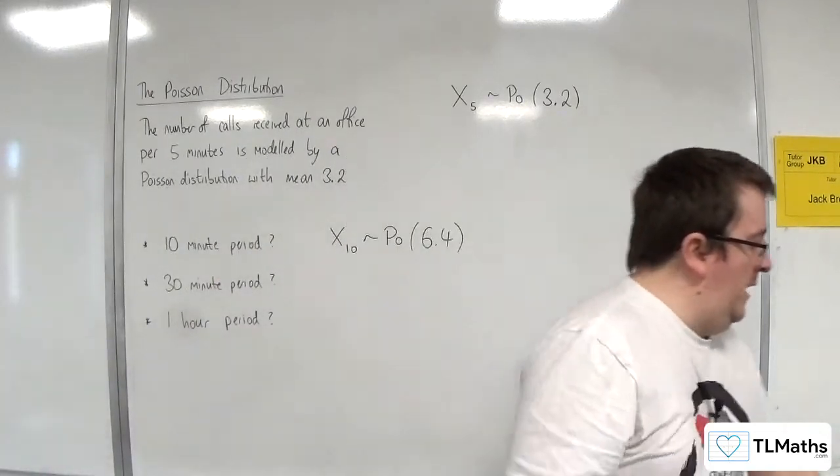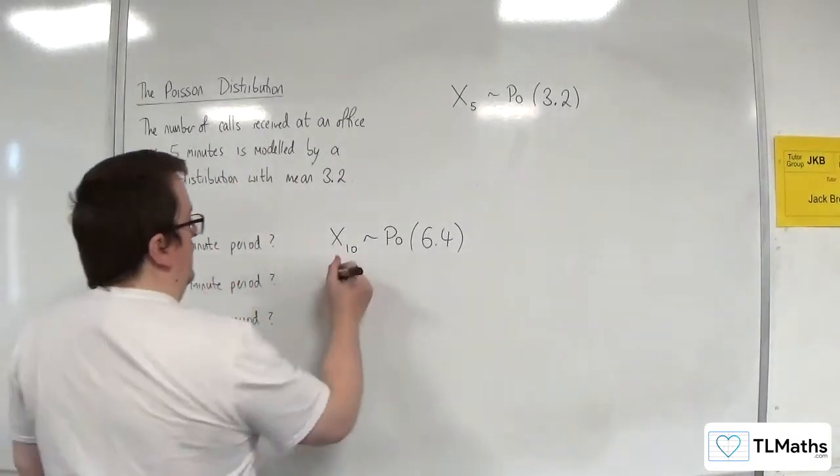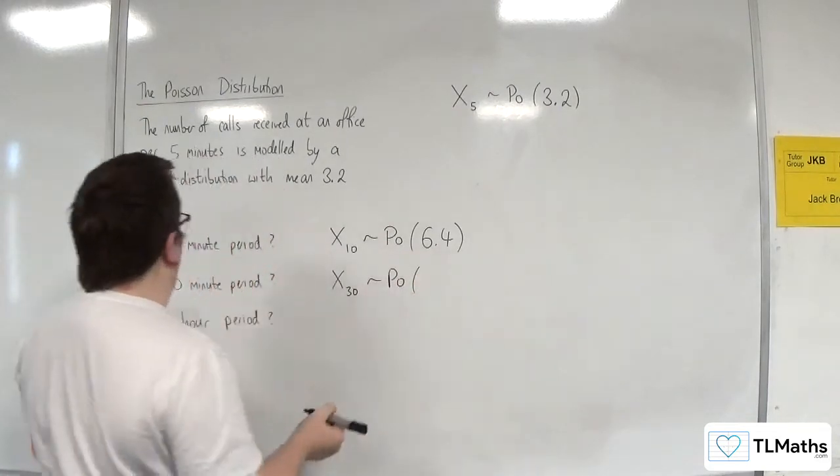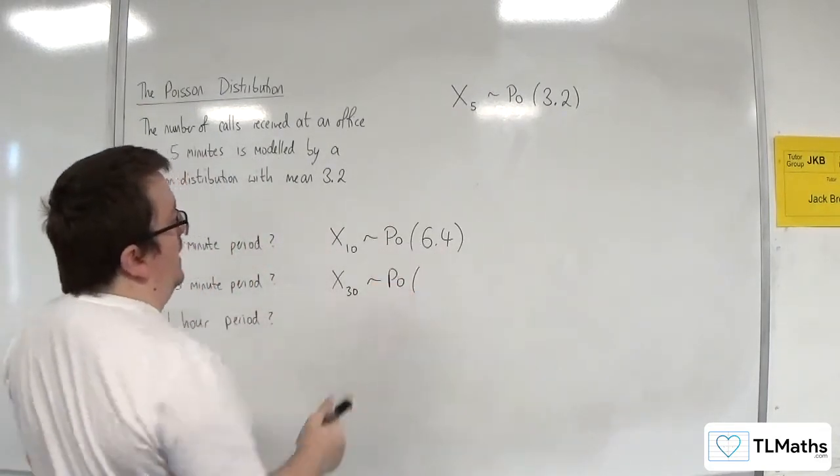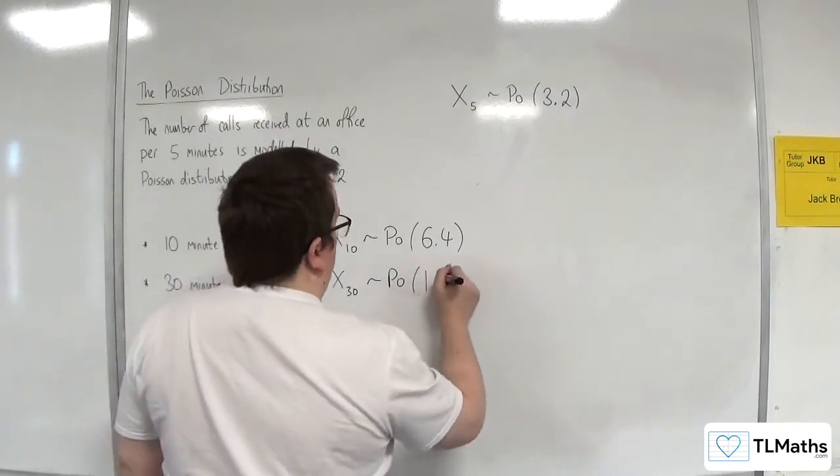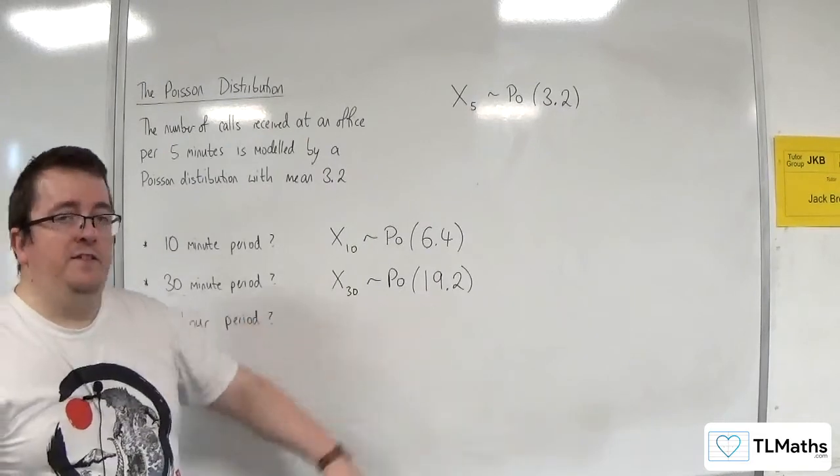So if you wanted a 30-minute period, a 30-minute period would be a Poisson distribution. Well, I need to multiply that through by 3, and that would be 19.2. So for a 30-minute period, the average would be 19.2.